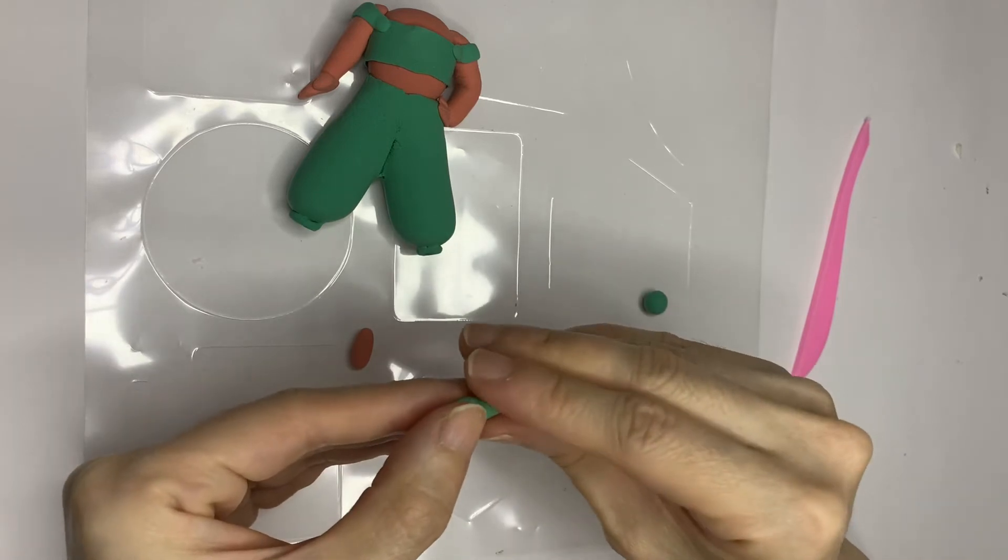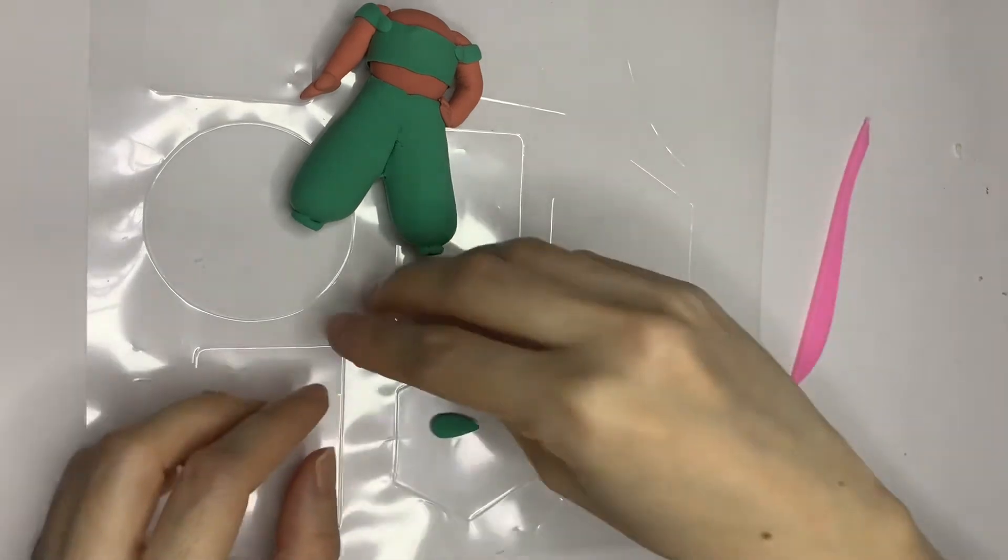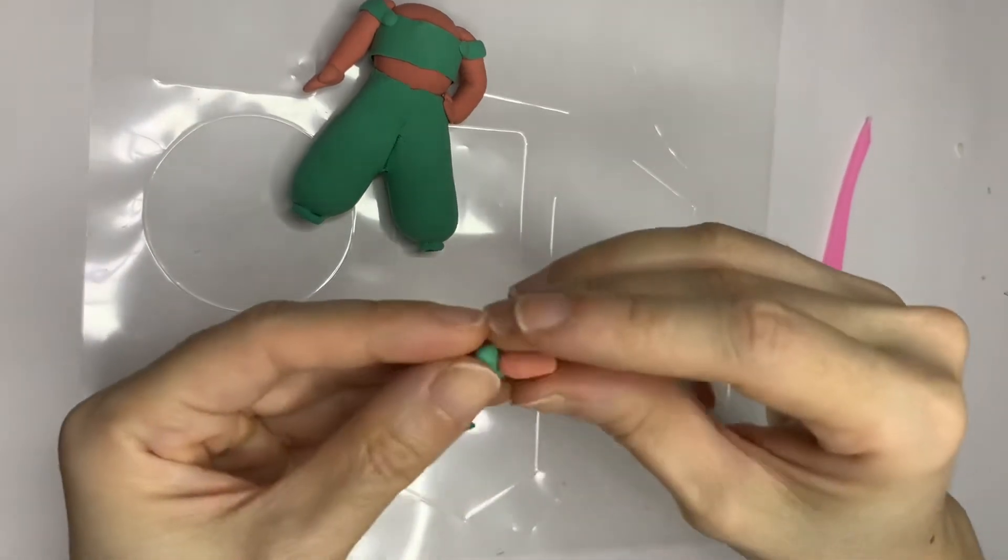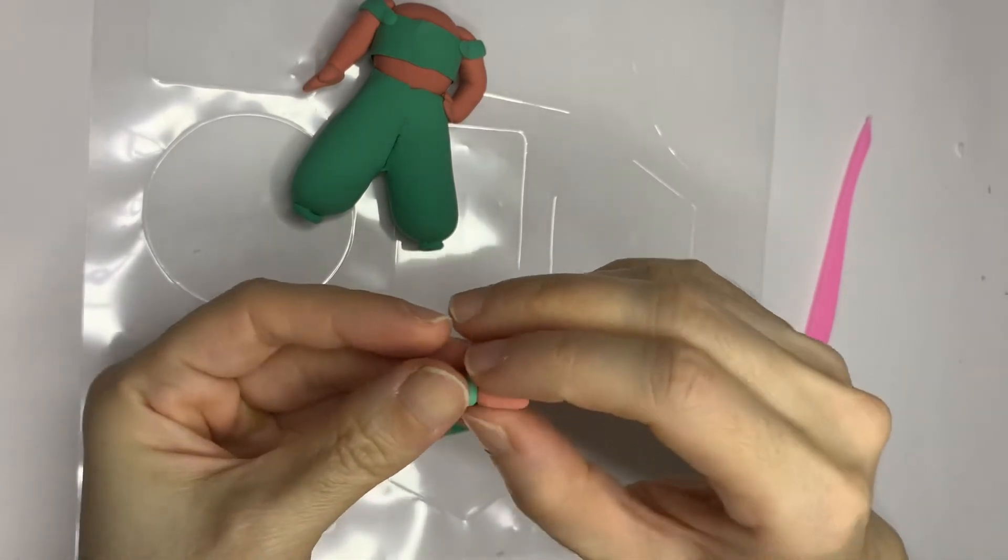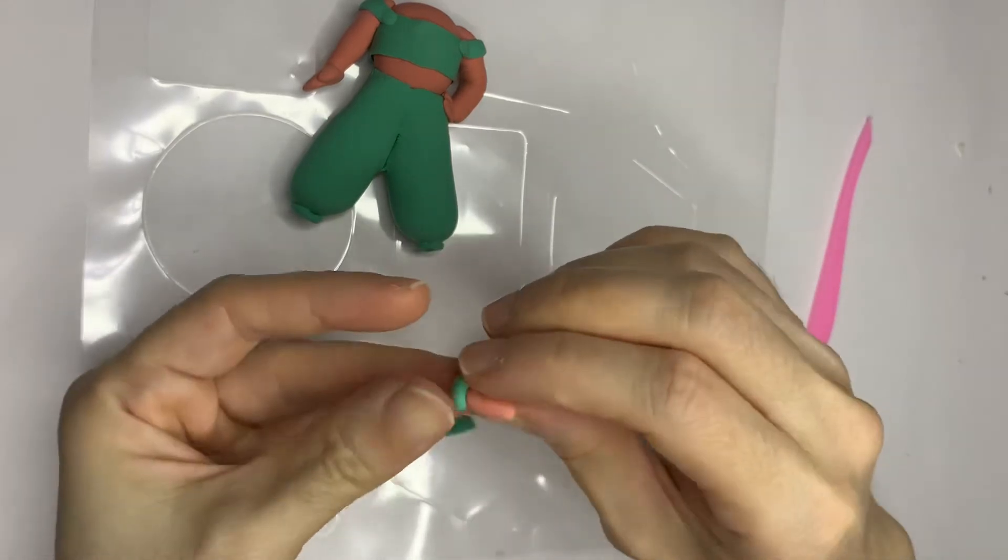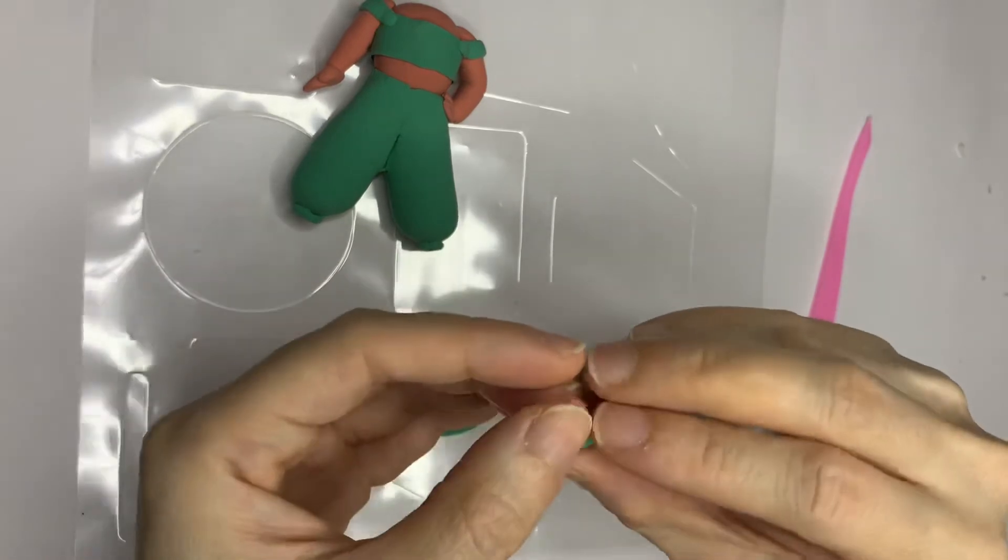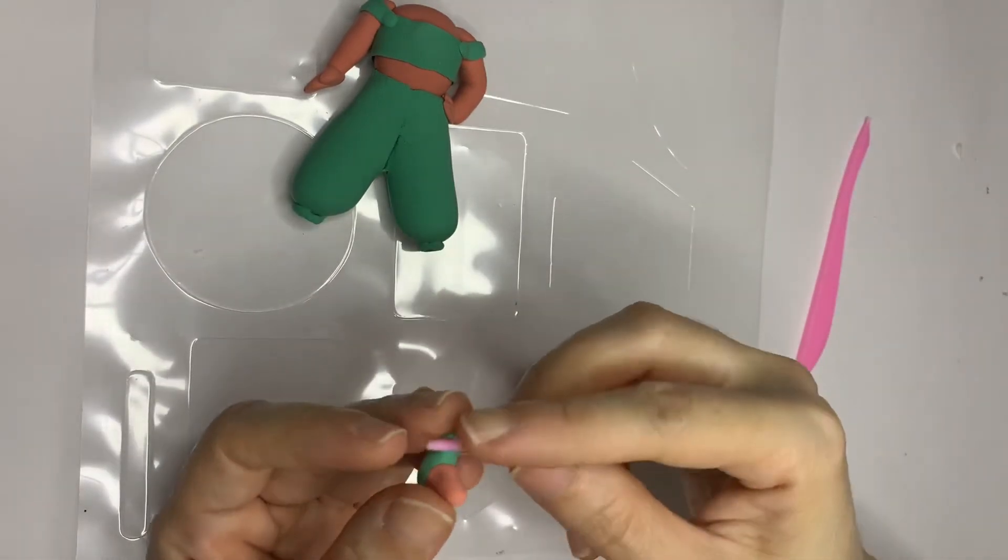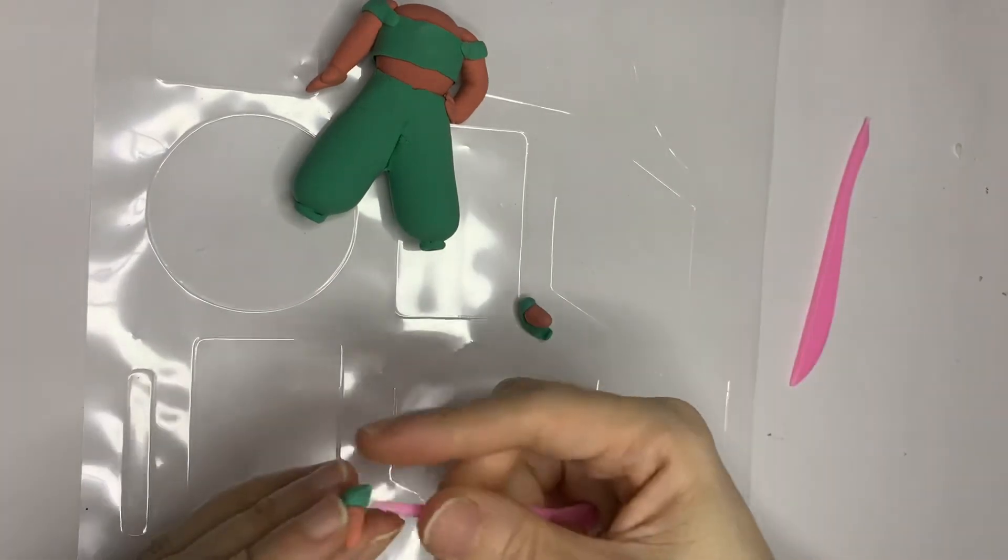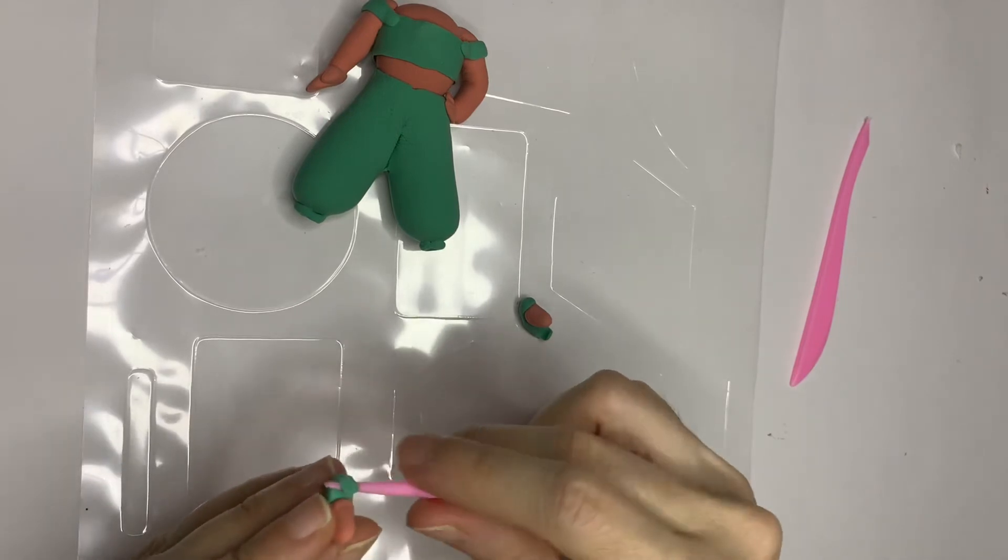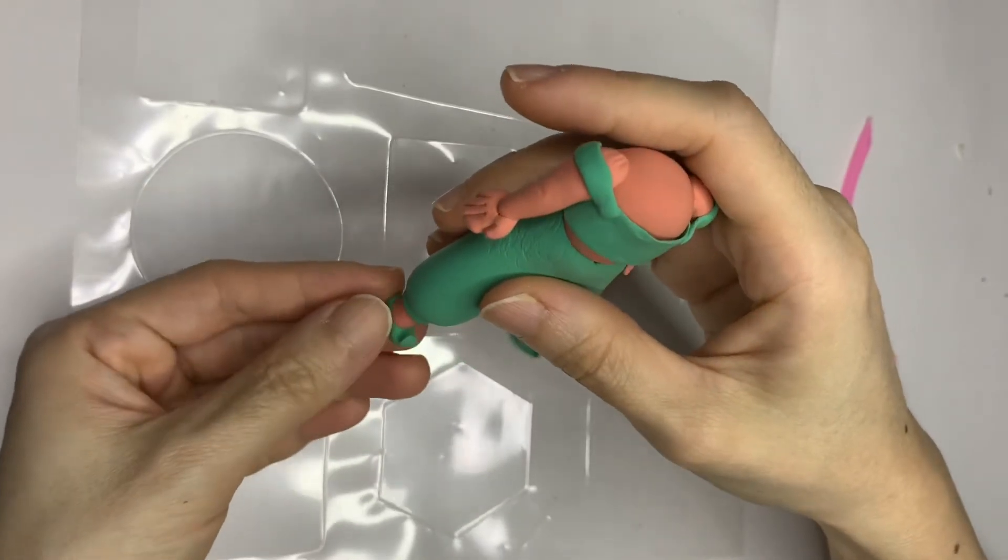Let's make the shoes using the same green of the shirt. Make two raindrop shapes. Attach a small portion of skin color to the round part of the shoe. Using a sharp tool, roll out the front sharp edge of the shoe. Attach the leg and the shoes to the round circle.